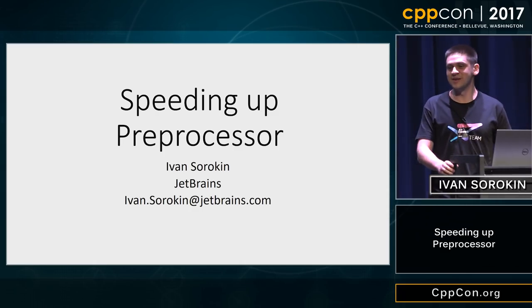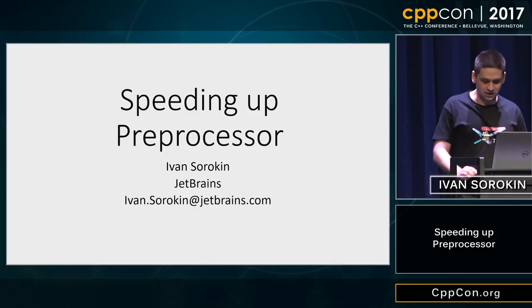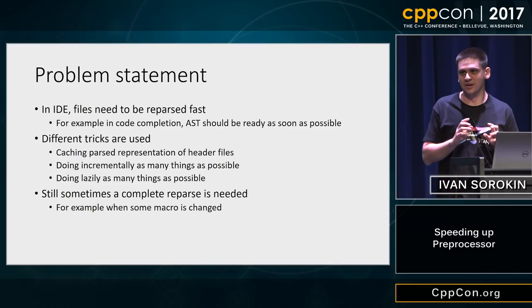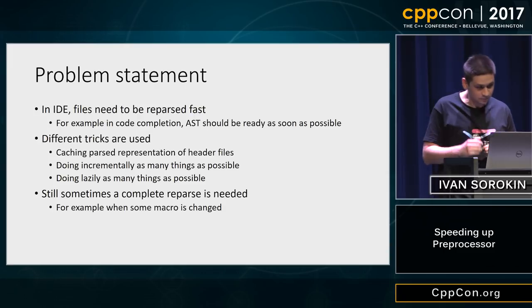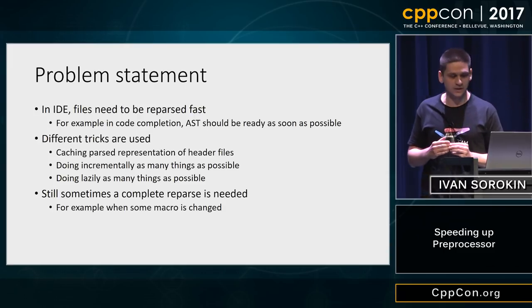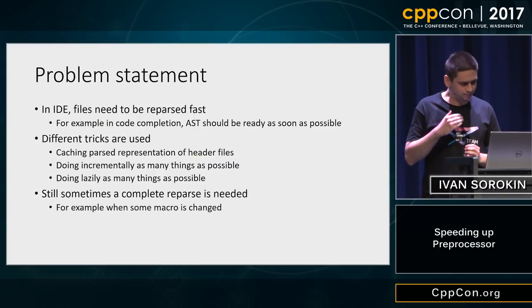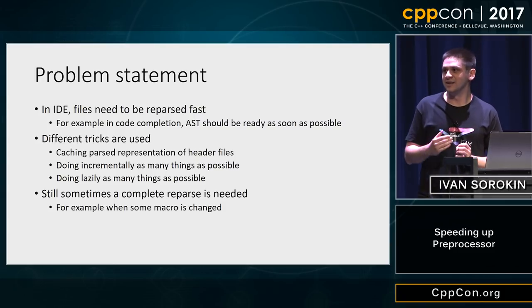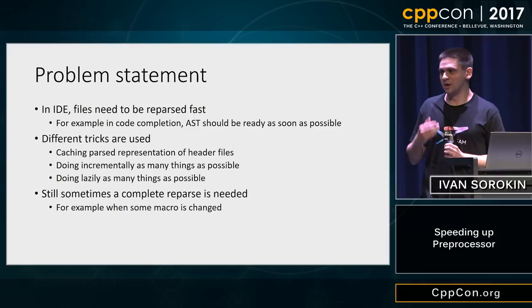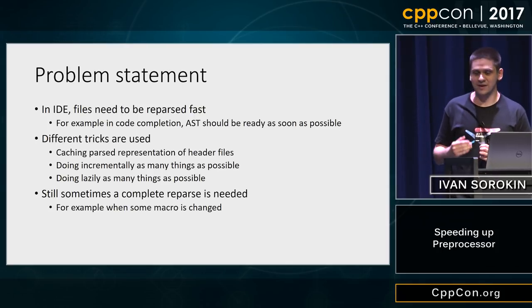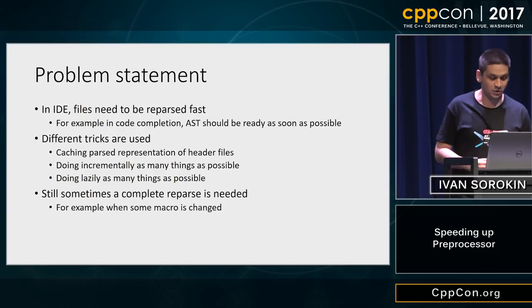In IDEs, we need to reparse files really fast. One example of this is code completion — it's when a user types object name dot and we want to show a completion list, and to do this we need to have an AST. The problem is that any editing invalidates the AST. So if we want to show the completion instantly, we need to reparse files instantly. That's why we employ different tricks to speed up this process.